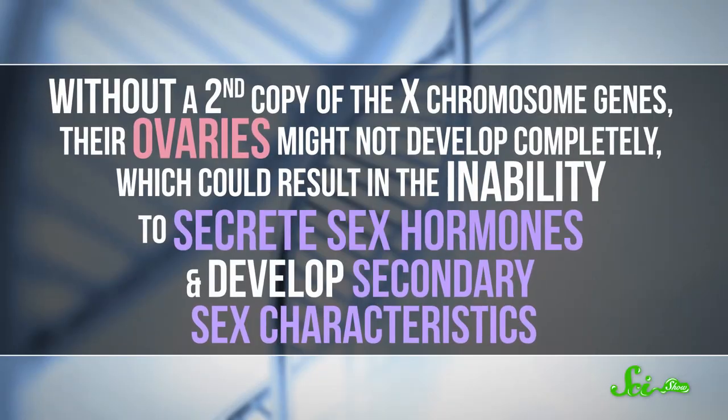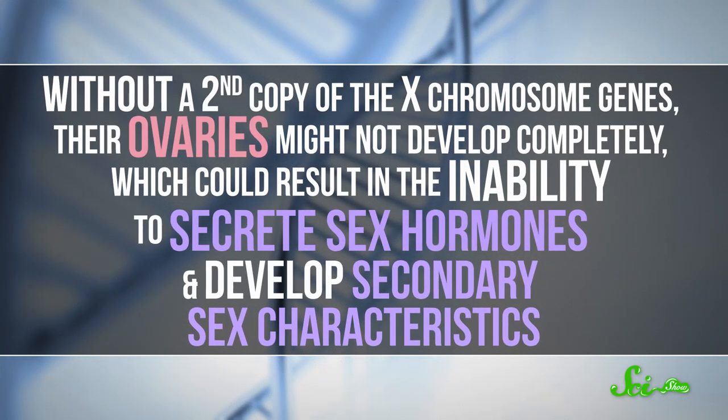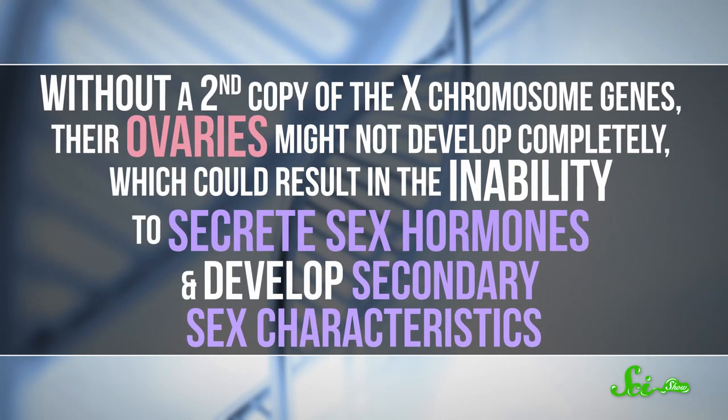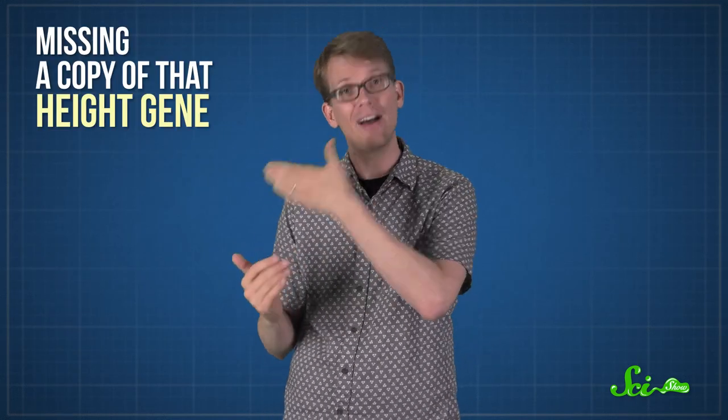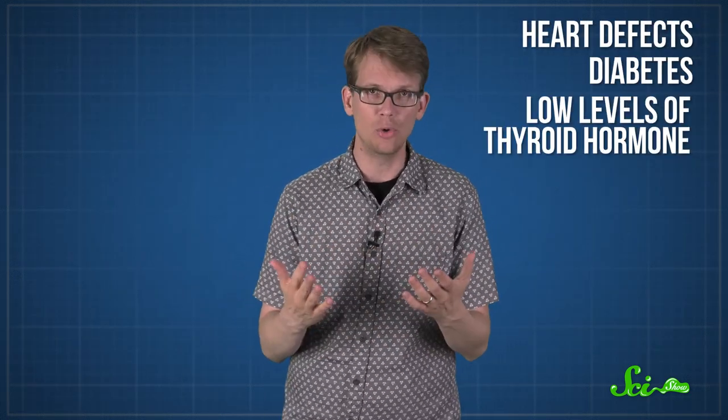But without a second copy of the X chromosome genes, their ovaries might not develop completely, which could result in the inability to secrete sex hormones and develop secondary sex characteristics. Some people with Turner syndrome might also be shorter, because they're missing a copy of that height gene. And others might experience more serious health problems, like heart defects, diabetes, and low levels of thyroid hormone.